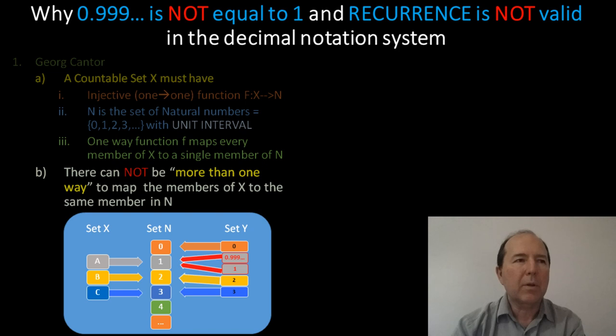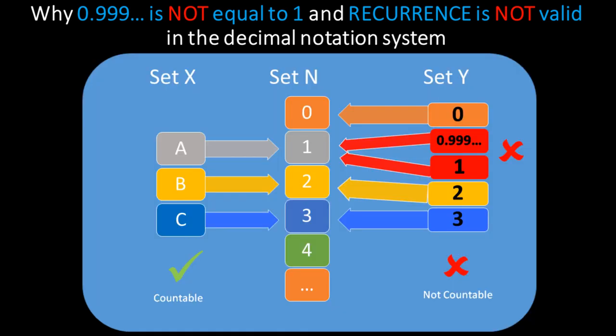And, for example, I've set out in diagrammatic form how this might be represented. So, on the left-hand side, we have a set with three members, A, B, and C, called X. In the middle, we have the set of natural numbers, represented by the numbers starting at 0 and going on infinitely.